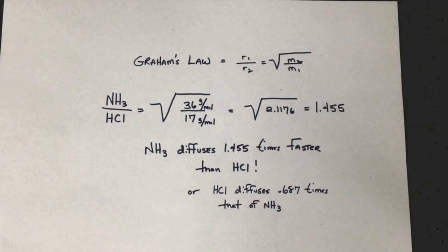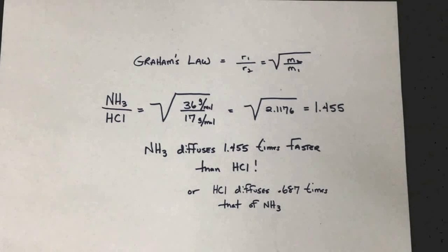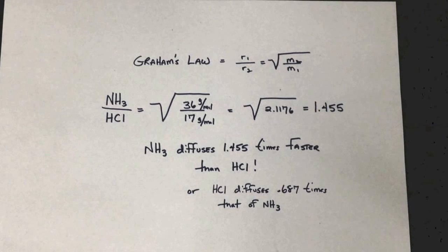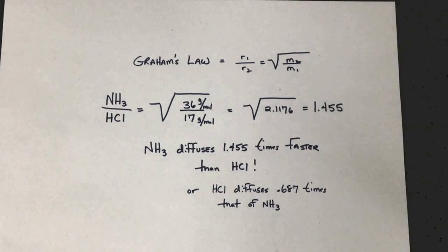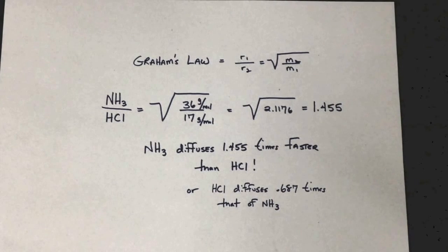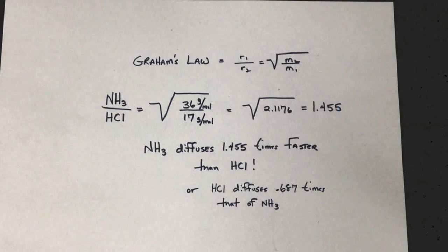Well, because it's so much lighter. And if you do take the inverse of 1.455, you'll notice that HCl diffuses 0.687 times that of NH3. So what's interesting, if you take the fact that HCl diffuses 0.687 times that of NH3,